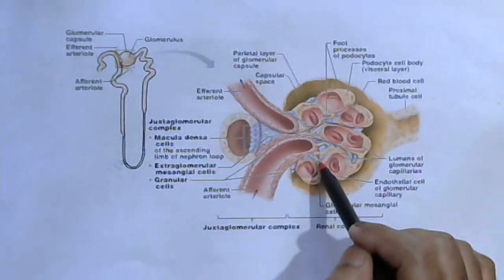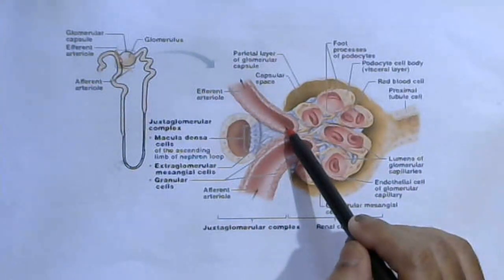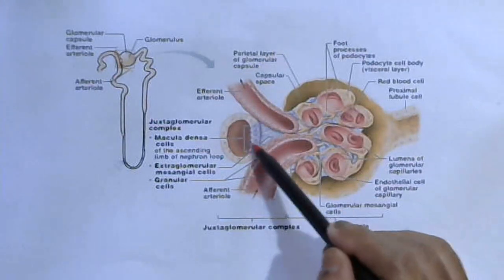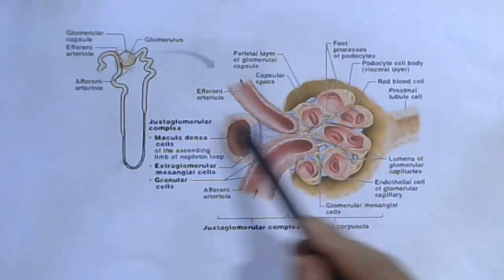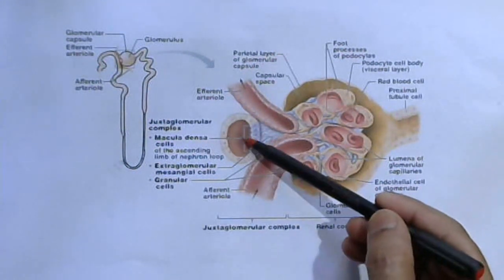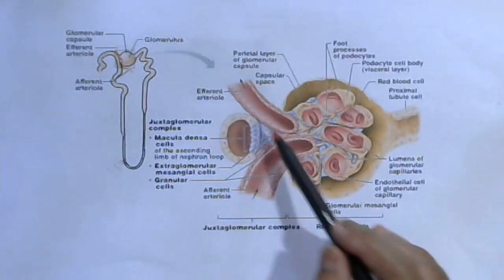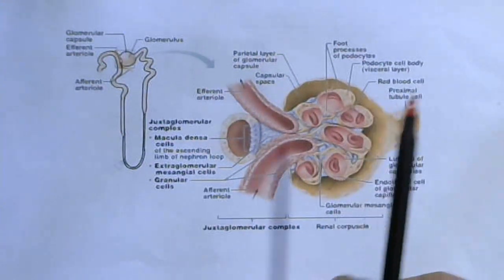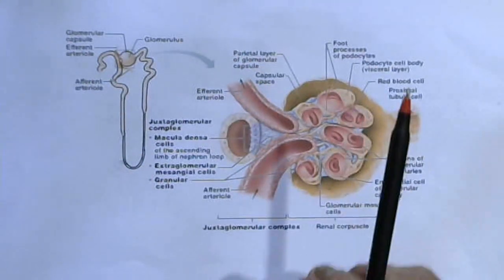The juxtaglomerular apparatus controls the glomerular filtration rate as well as the renal flow of blood. The afferent and efferent arterioles at the vascular pole - the distal convoluted tubule's first segment connects here. The tubular fluid passes through this tube and its wall contains special macula densa cells. On the wall of the afferent and efferent arterioles are juxtaglomerular cells. These are also called extra-glomerular mesangial cells, and together they form the juxtaglomerular apparatus.